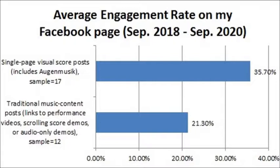As you can see, Facebook's calculation of the engagement rate was nearly double, on average, for the single-page visual scores compared with traditionally formatted music-related posts on my page. Now, double may not seem like an overwhelming difference, but remember that when engagement includes shares or reposting, these effects become compounding. So the ultimate impact of the visual element on user reach can become exponential instead of just linear — and that's exactly what I saw with my content.